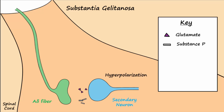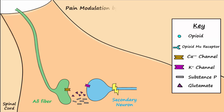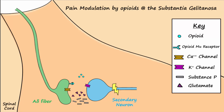Let's show how opioids can interrupt this synaptic transmission. Activation of G-protein-coupled mu-receptors by opioids in the membrane of the axon terminal cause closure of calcium channels, leading to less release of excitatory neurotransmitters, like substance P and glutamate, from the axon terminal of the primary neuron. This reduction leads to less excitation of the secondary neuron, hyperpolarization, and a decrease in axon potential frequency, decreasing pain signals sent to the brain.